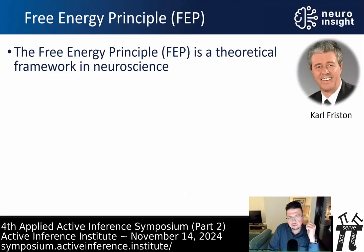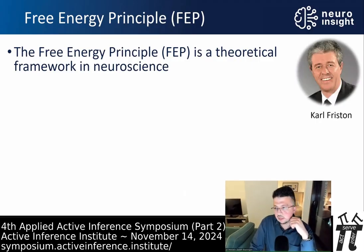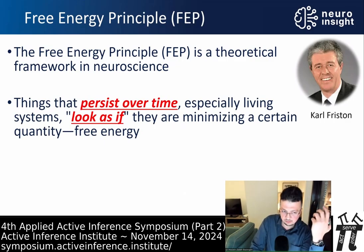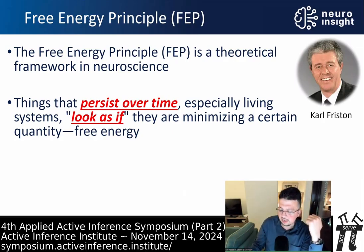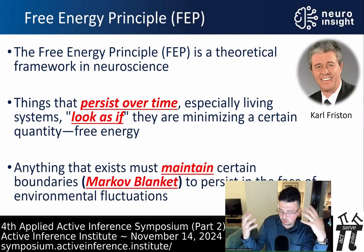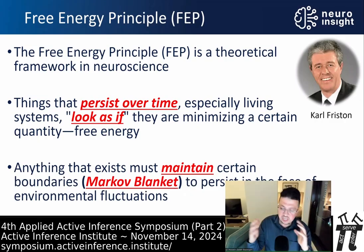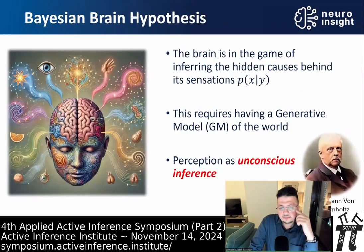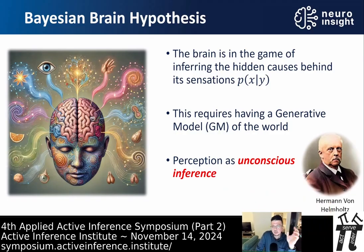The Free Energy Principle is a theoretical framework in neuroscience developed by Karl Friston. Basically, things that persist over time — especially living systems — look as if they are minimizing a certain quantity called free energy, as if they're maintaining a boundary called a Markov blanket to persist in the face of random fluctuations in the environment. This connects well with the Bayesian Brain Hypothesis.